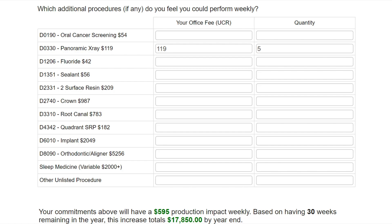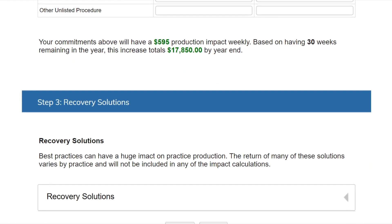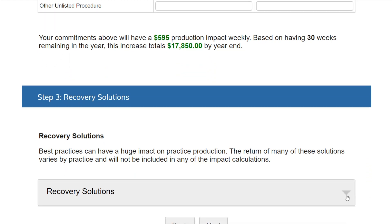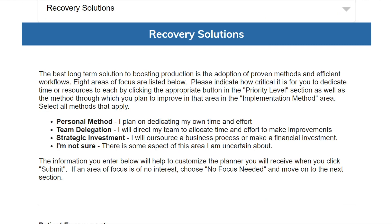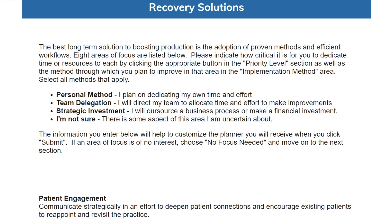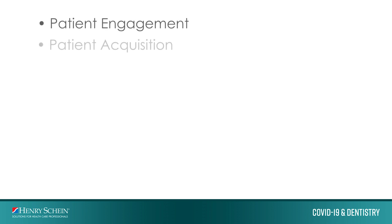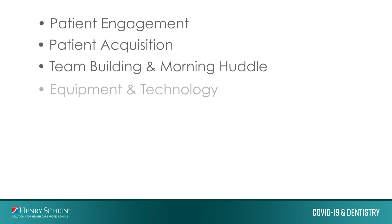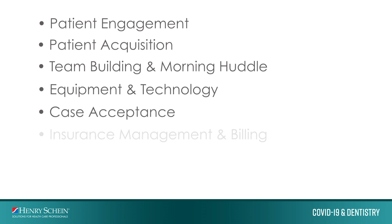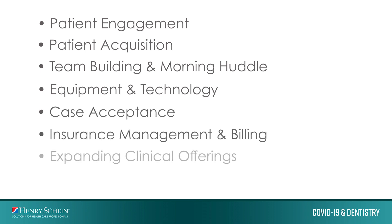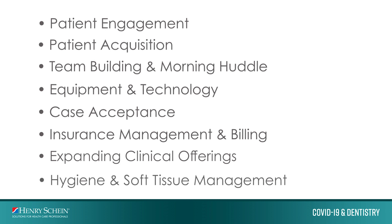Step three: recovery solutions. So far the planner has focused on adjusting how much you work or by adding more procedures per week. However, we also need to emerge from this pandemic working smarter than ever before. This third step focuses on best practices in your office. The best long-term solution to boosting production is the adoption of proven methods and efficient workflows. The planner now walks us through eight areas of focus: patient engagement, patient acquisition, team building and morning huddle, equipment and technology, case acceptance, insurance management and billing, expanding clinical offerings, and hygiene and soft tissue management.